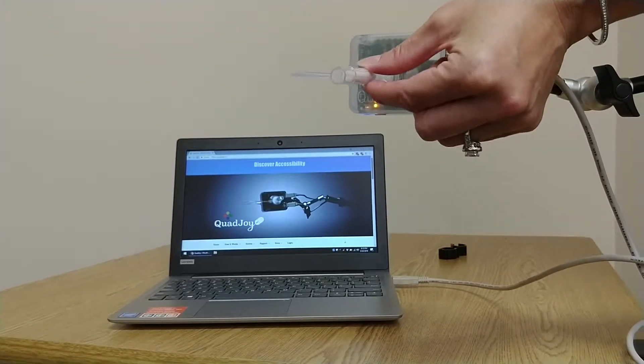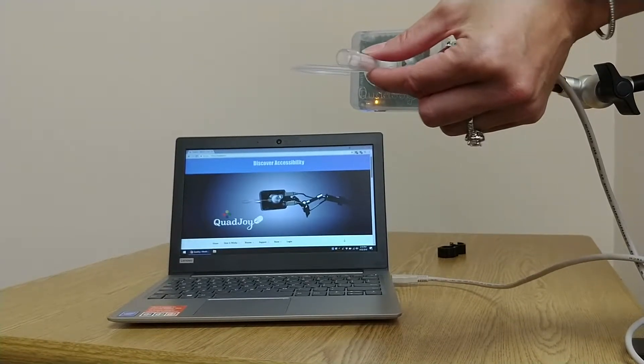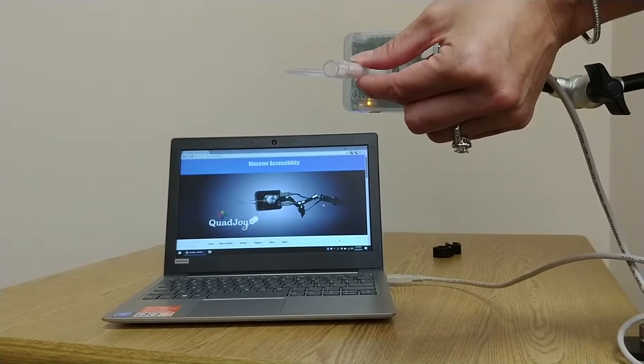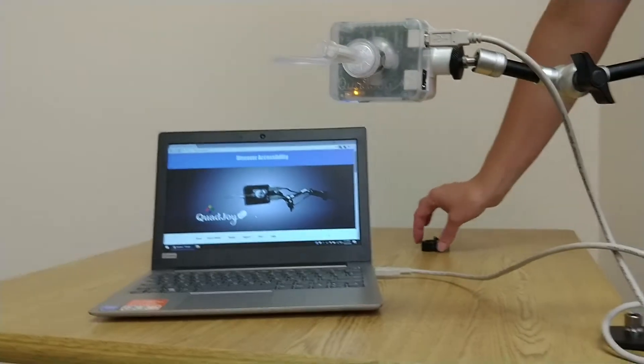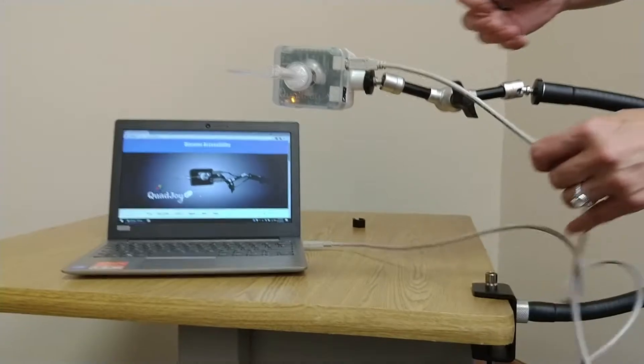In the event something is not working, try unplugging one of the ends of the cable and replugging it in to correct the problem. Now you can take your cable clips and attach them to the flex arm to secure the USB cable.